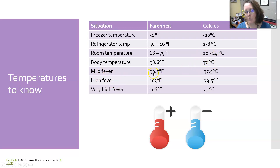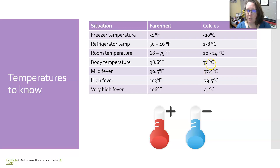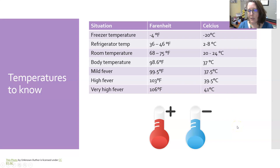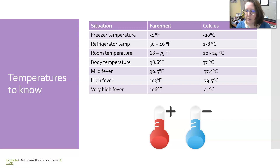A mild fever starts at 99.5°F and goes up to 103°F, which is 37.5°C. A high fever is around 103°F, which is 39.5°C — quite a significant jump. A very dangerously high fever of 106°F would be 41°C. If you memorize the Celsius values, you'll have a solid working knowledge for healthcare and lab settings.